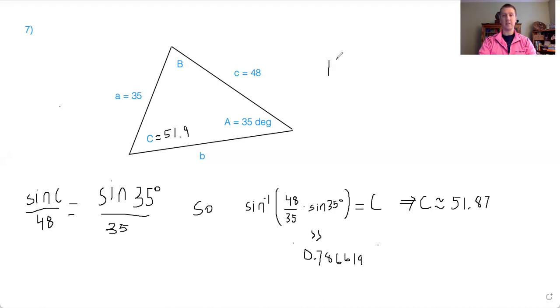So we take 180 and we take away these two angles, 51.9 and the 35. And what does that give us? That gives us, if I did this math correctly earlier, possibly 128.1.